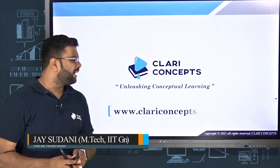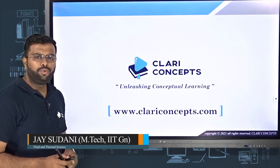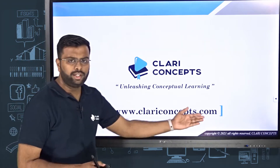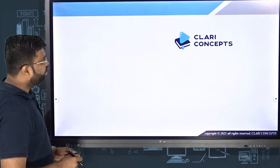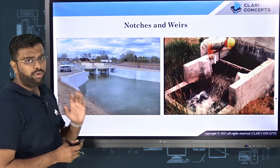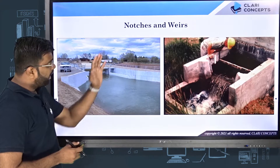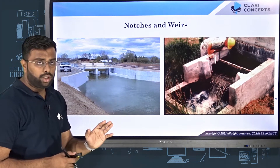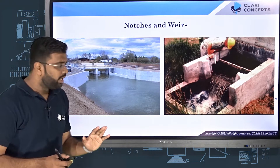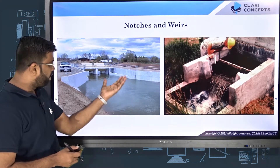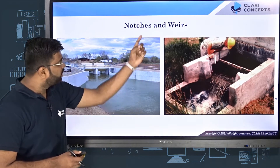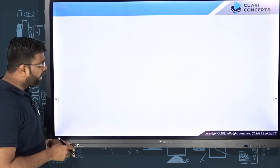Hello students, welcome back to Cleric Concepts — unleashing conceptual learning. For more lectures on engineering concepts, you can log into our website clericconcepts.com. As we have studied earlier, if I talk about notches and weirs, we have seen that they are used to calculate the flow rate of water flowing through big water bodies like canals and rivers. If you want to measure the flow rate of this kind of fluid flow, you can use notches and weirs.